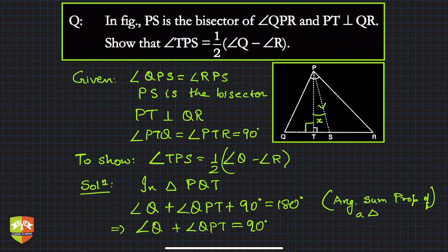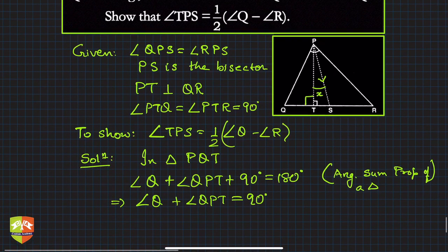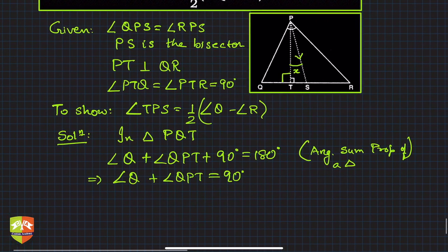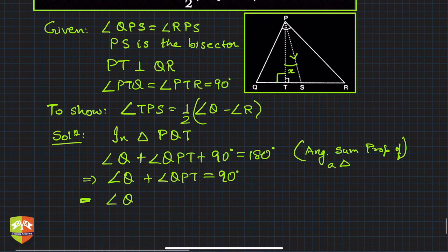Now if you look at ∠QPT, what is ∠QPT? If you look very carefully, what is ∠QPT? So this is ∠Q + ∠QPT.